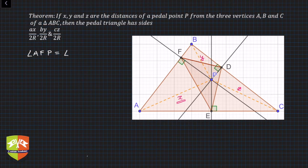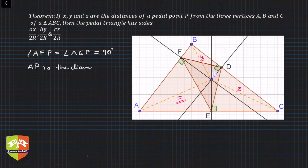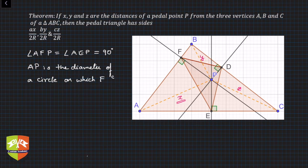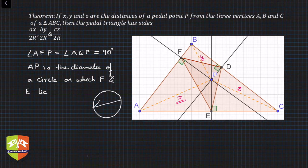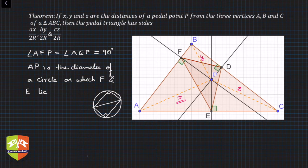Angle FPA and angle EPA are both 90 degrees, so we can say that AP is the diameter of a circle on which F and E lie. This is because a diameter subtends 90 degrees on the circumference. Therefore, AP is the diameter of the circumcircle of triangle AEF.